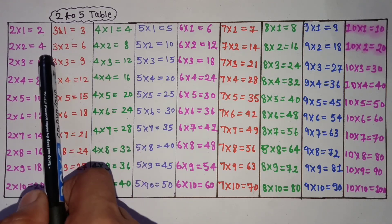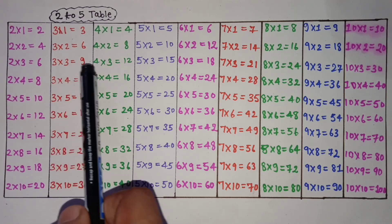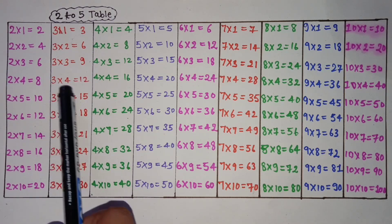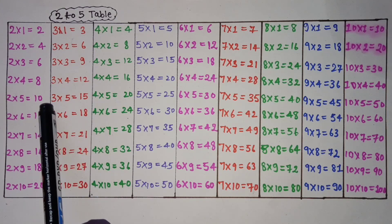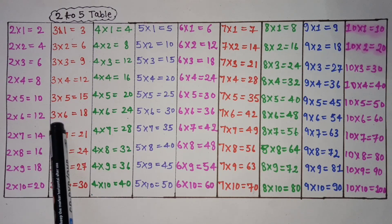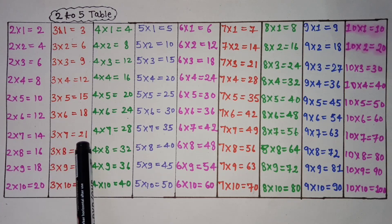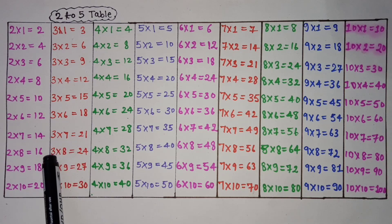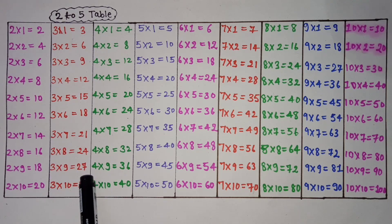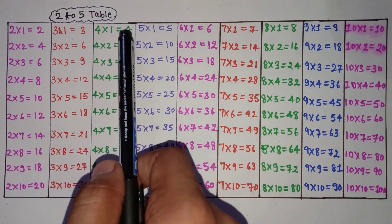3 1 is 3, 3 2 is 6, 3 3 is 9, 3 4 is 12, 3 5 is 15, 3 6 is 18, 3 7 is 21, 3 8 is 24, 3 9 is 27, 3 10 is 30.